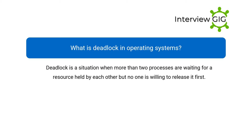What is deadlock in operating systems? Deadlock is a situation where more than two processes are waiting for a resource held by each other, but no one is willing to release it first.